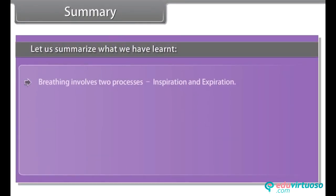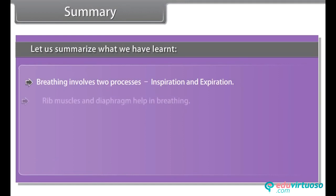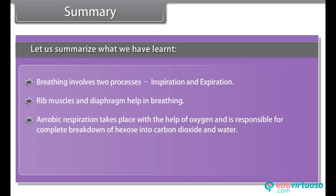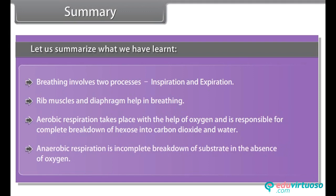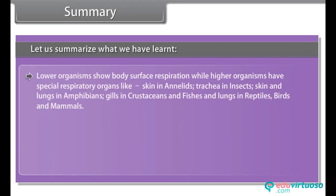Summary: Breathing involves two processes — inspiration and expiration; rib muscles and diaphragm help in breathing. Aerobic respiration takes place with the help of oxygen and is responsible for complete breakdown of glucose into carbon dioxide and water. Anaerobic respiration is the incomplete breakdown of substrate in the absence of oxygen. Lower organisms show body surface respiration, while higher organisms have special respiratory organs — skin in annelids, trachea in insects, skin and lungs in amphibians, gills in crustaceans and fishes, and lungs in reptiles, birds and mammals.